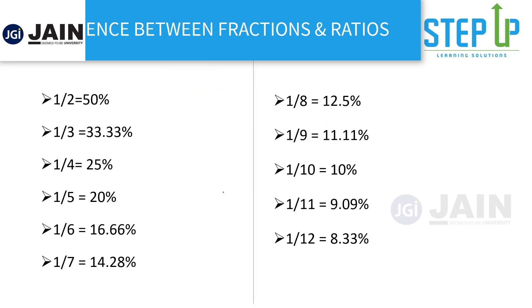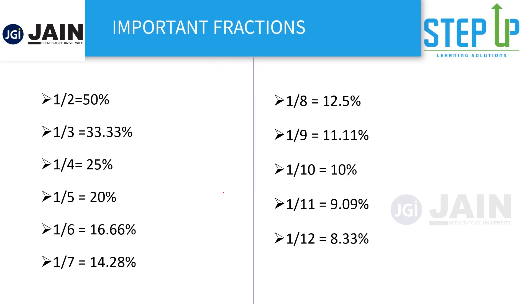Now let's move to the crux of this video. One by two is 50 percent, one by three is 33.33 percent — some of these you would already know. What we want to focus on are a few more terms like 16.66, 14.28, 9.09, and 8.33. If we want to save a considerable amount of time in the exam, we should learn these values.